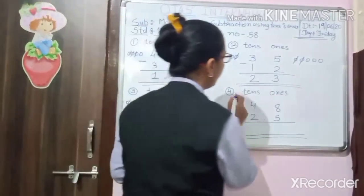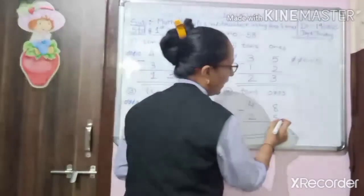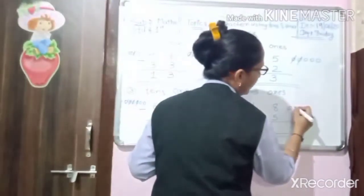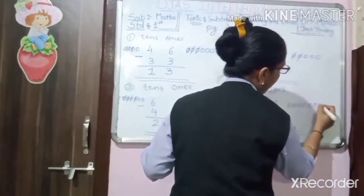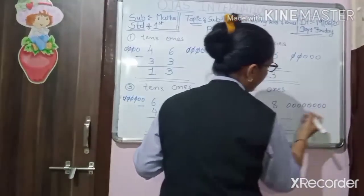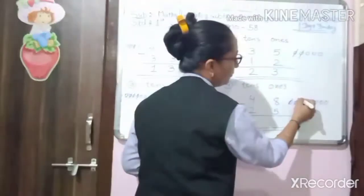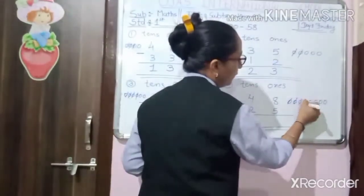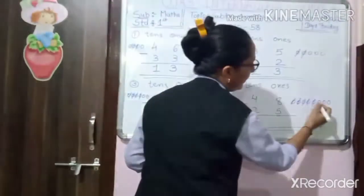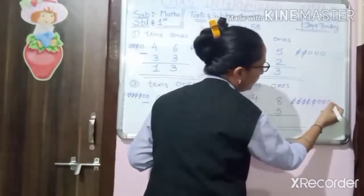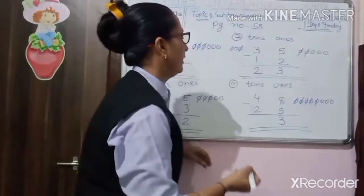Then number 4: 48 and 25. So 1, 2, 3, 4, 5, 6, 7, 8. So how many cuts we have to do here? 1, 2, 3, 4, 5. Then how many remain? 1, 2, 3. So you have to write down 3.